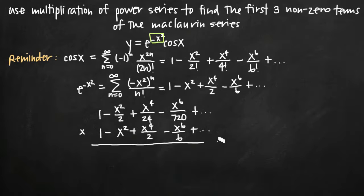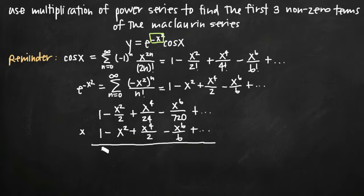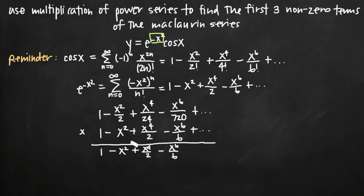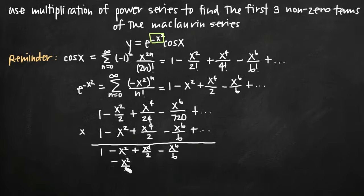We draw a line under these and proceed just like multiplication from grade school. We take the first term in the top row, which is 1, and multiply it by every term in the bottom row: 1 times 1 gives 1; 1 times negative x squared gives negative x squared; 1 times x to the fourth over 2 gives plus x to the fourth over 2; and 1 times negative x to the sixth over 6 gives minus x to the sixth over 6. Then we take the second term, negative x squared over 2, and multiply it by each term in the bottom row. Negative x squared over 2 times 1 is negative x squared over 2, which we place under the x squared column.